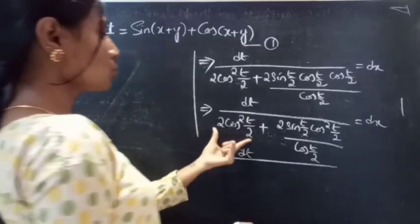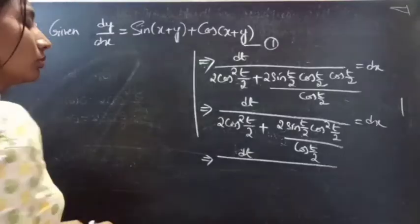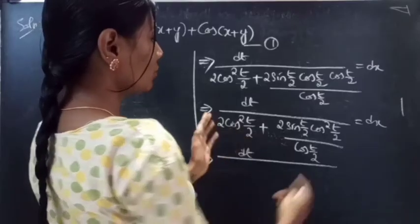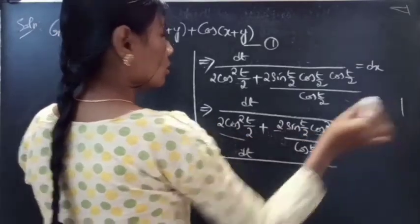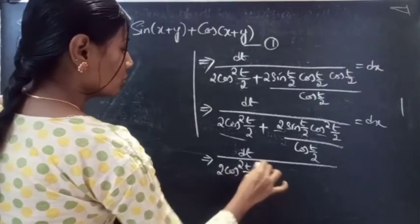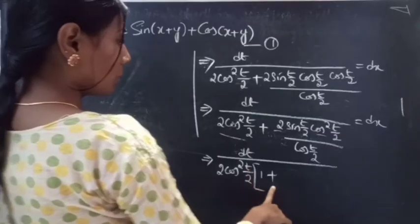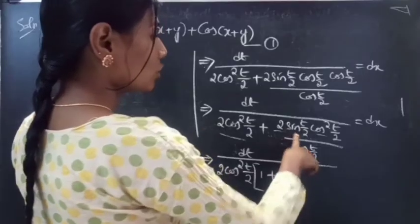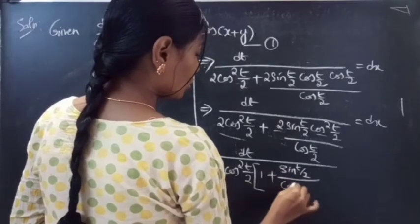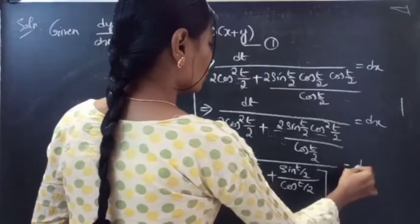Now take 2cos²(t/2) common from these two terms. We get dt over 2cos²(t/2) times (1 plus sin(t/2)/cos(t/2)) equals dx, where sin(t/2)/cos(t/2) equals tan(t/2).